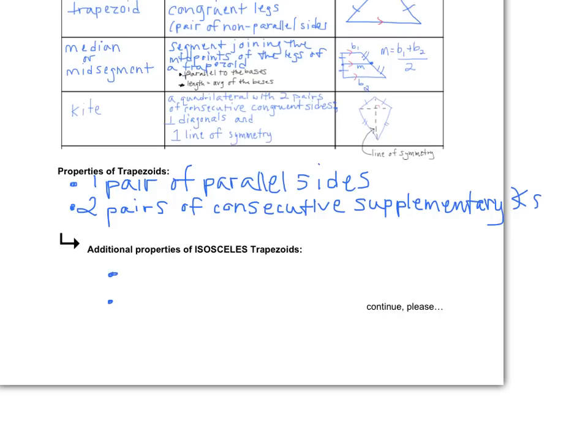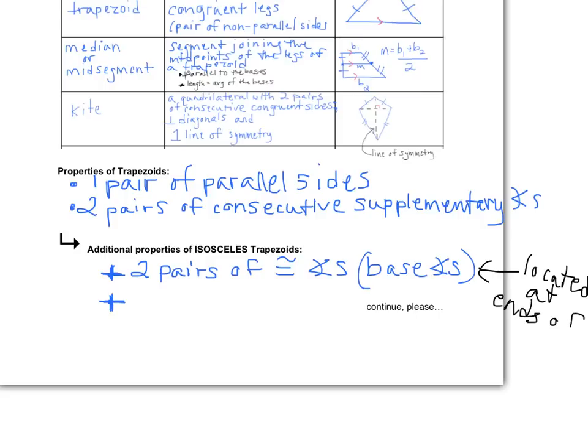And then we've got some additional properties for isosceles trapezoids, but I'm going to make these into plus signs, because remember, anything that's true for an isosceles trapezoid, is because it's a trapezoid, the things above are true. And then an isosceles trapezoid additionally has the following things that we can work with. It's going to be two pairs of congruent angles, and those are called the base angles, because they are located at either end of the two bases. And then the second additional property that we're going to be working with for an isosceles trapezoid is that the diagonals are congruent themselves. And in our next example, we're actually going to prove that.